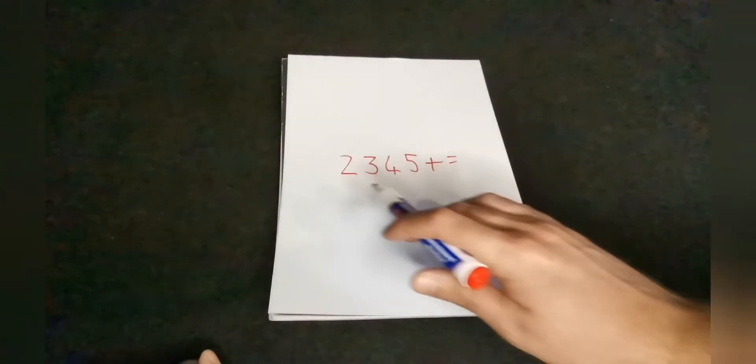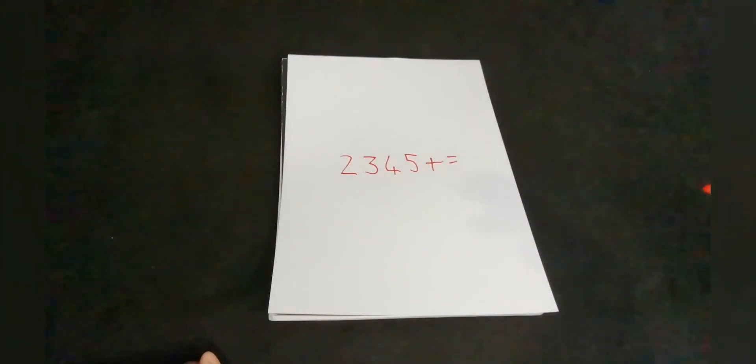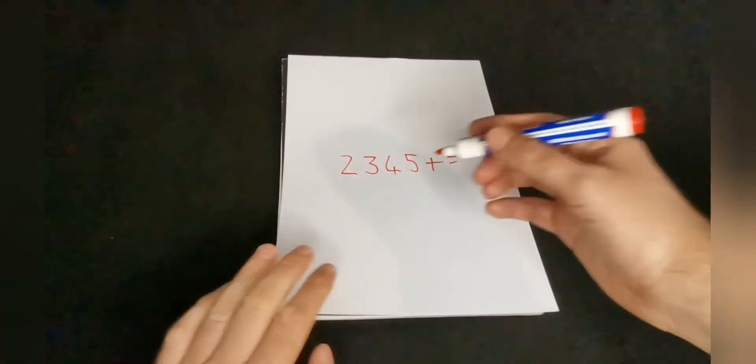So they have these numbers and nothing else except the plus and the equals to create a true equation. Now you will see them scribbling and going crazy and eventually they will give up.